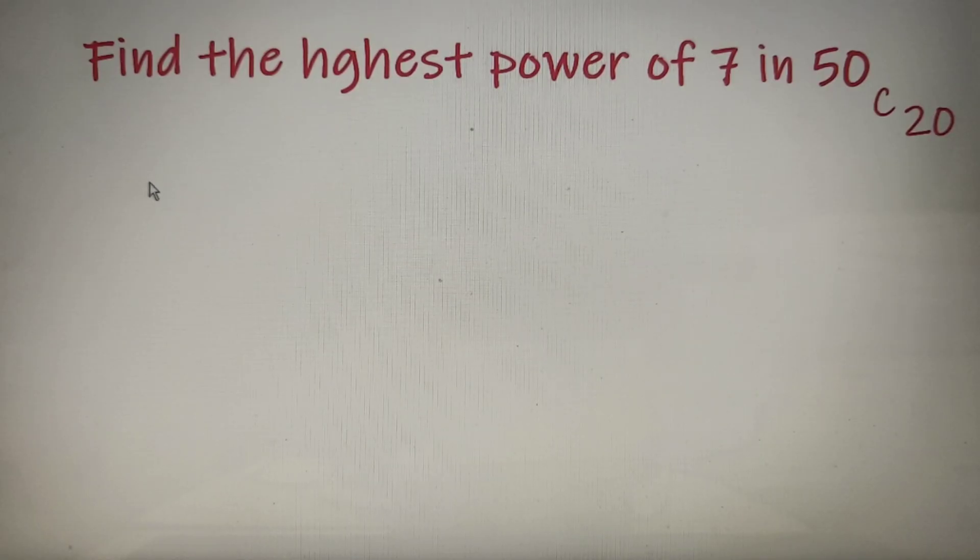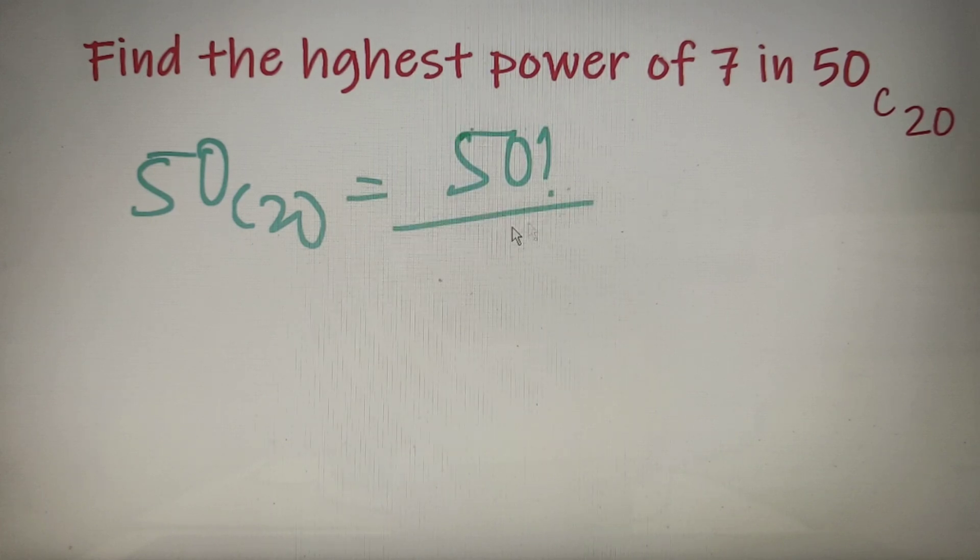According to the formula of nCr, I can say that 50C20 is equal to 50 factorial divided by 30 factorial into 20 factorial.